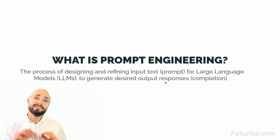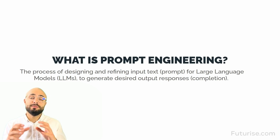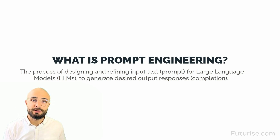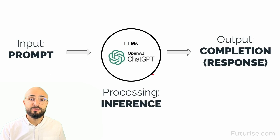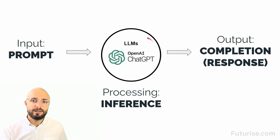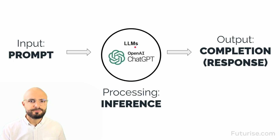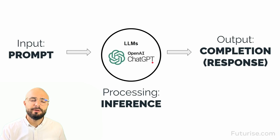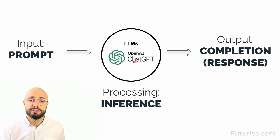Simply put, it's typing your question or prompt in a way that gives you the best possible output from the language model. To cover some of the lingo and terminology we'll use throughout this course: in the middle here we have LLM, which is the acronym for large language model. We're going to be using OpenAI's ChatGPT, but prompt engineering can be applied to any large language model. The focus of this course is on ChatGPT and the other GPT models.